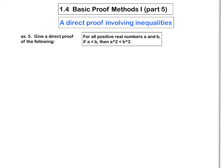In this video, we're going to demonstrate how to do another direct proof, this one involving inequalities. Here's the one that we're going to do: for all positive real numbers A and B, if A is less than B, then A squared is less than B squared.